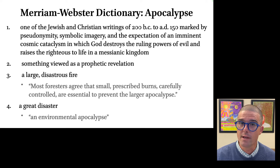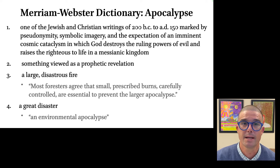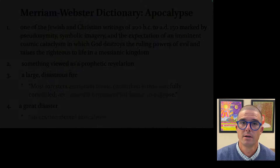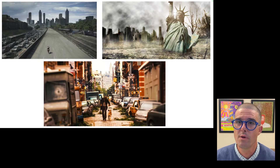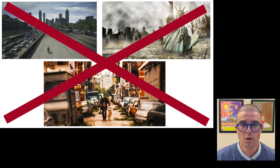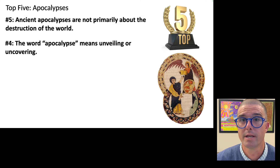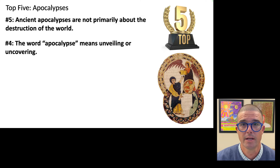This definition notes three features of ancient apocalypses: pseudonymity, symbolic imagery, and cosmic cataclysm. We'll return to these features and others in just a little bit. For now, the important point is that when we think of ancient apocalypses, we need to set aside the modern notion of apocalypses popularized by film and television. While many ancient apocalypses do have a dose of disaster in them, their primary purpose is not to describe how the world ends.